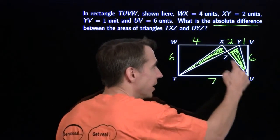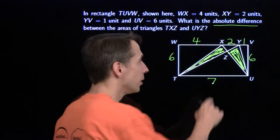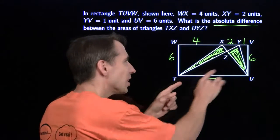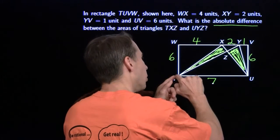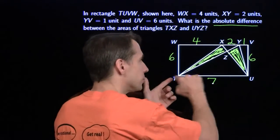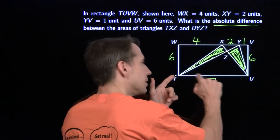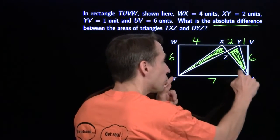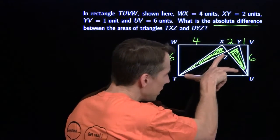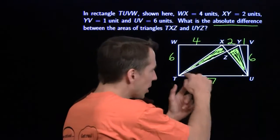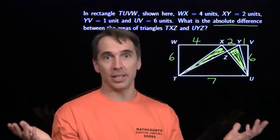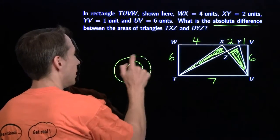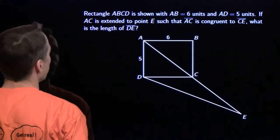We're going to be strategically lazy. We could go ahead and find the area of this little triangle — you try to figure it out on your own, because this triangle is similar to that triangle. But I'm going to be strategically lazy. The other little triangle UYZ comes from taking big triangle TYU — which is also half the rectangle, just like TXU — and subtracting TZU, the same little piece. So for each little triangle, we start with half the rectangle and cut out the same piece TZU. The remaining little triangles have to have the same area, which means the absolute difference is indeed nothing — zero. Nice work, Harv.